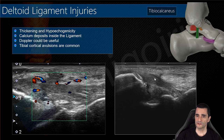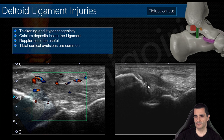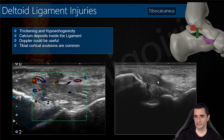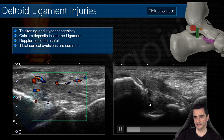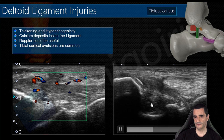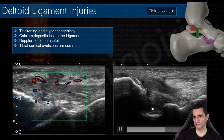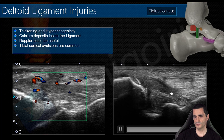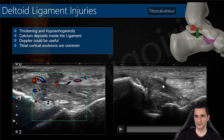Tibial cortical avulsions are very common — always check the insertion. You can see between the tibia and calcaneus this thickening of the ligament and an avulsion here. There may also be a tear inside the posterior tibial ligament. You can see the affection of the posterior tibial ligament and the affection of the superficial component with this avulsion at its insertion.